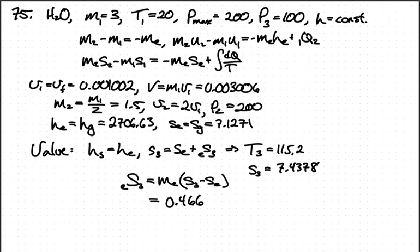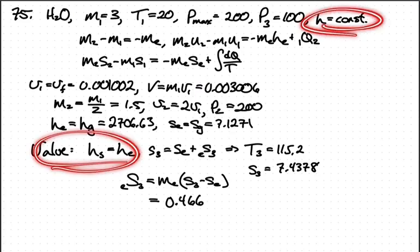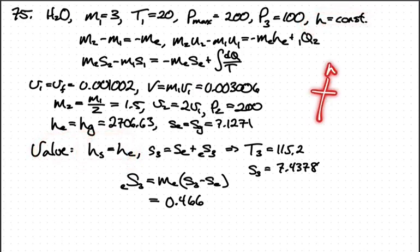Across the valve, h3 is the same as what's exiting. We have h exit here and h3 here with the valve between. From entropy, the entropy in the third state is the entropy that exited plus the entropy generated across that valve. We look at a control volume around the valve.